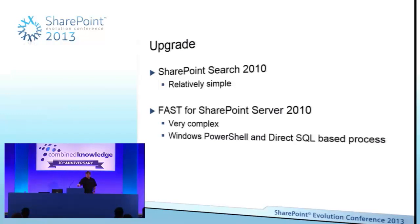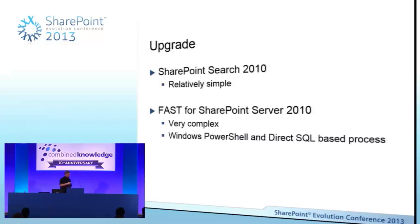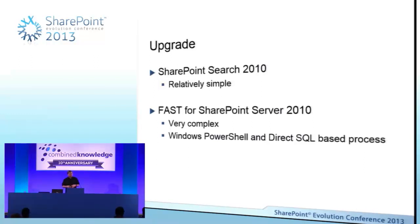I'm going to show you some of these scripts later. These scripts do PowerShell queries against the Fast search service, SQL queries against the SQL databases, and read and write queries to create a search service database. They transform the FAST search configuration — the metadata managed properties inside FAST, the configuration of anything to do with scopes or content sources — into a format that's identical to a 2010 search service application. Then we can literally take that database and upgrade it.